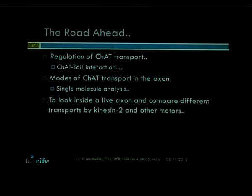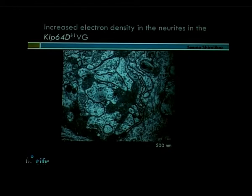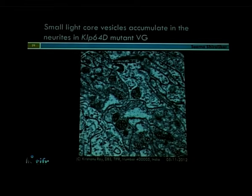I will now switch to another study that gives you an idea about the biological consequences of ChAT transport. When we looked at axons in the mutant where ChAT transport is defective, we found two phenomena. One was large electron-dense material accumulated in the axon — indicating a huge accumulation of soluble protein. But in some other axons we also found small vesicular accumulates, which were surprising to find — very small vesicles of about 30 nanometers not generally known to be present in axons.